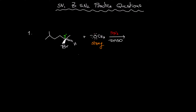What is going to happen is the methoxide will attack from the back side of the Br, attacking the second degree carbon, and therefore the Br will leave. As you remember, in the SN2 mechanism bond forming and bond breaking happen at the same time. Therefore the product in this case will be the following.